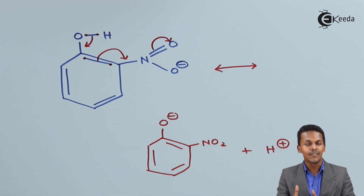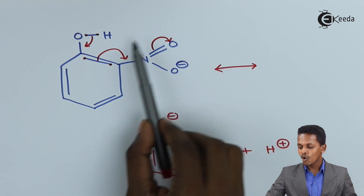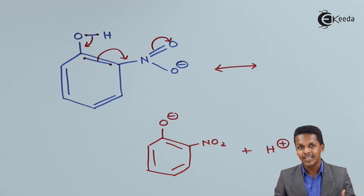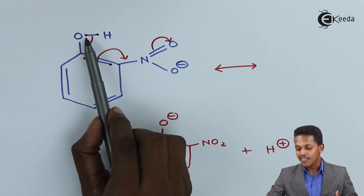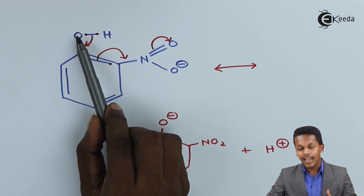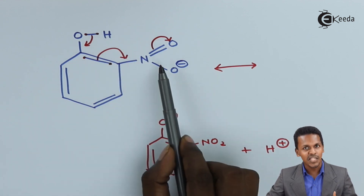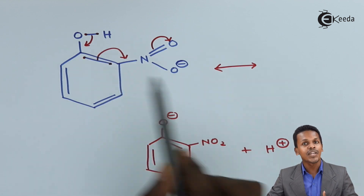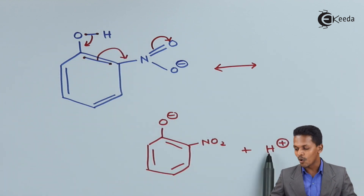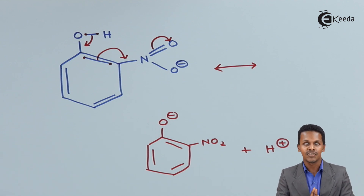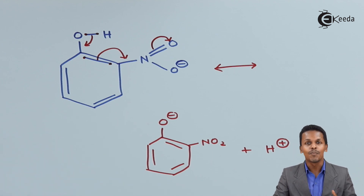This is not the case with O-cresol, because at the ortho position there is a CH₃ group, which is an electron donating group. It stabilizes the O-H bond, causing the oxygen atom to have more attraction towards the hydrogen atom. The hydrogen atom will not be removed in the presence of CH₃, and if the hydrogen ion is not removed as H⁺, we cannot say it is acidic. This is why O-nitrophenol is more acidic than O-cresol.